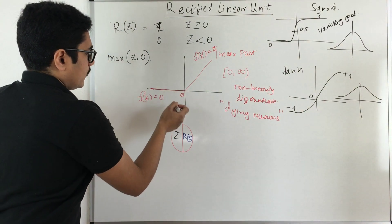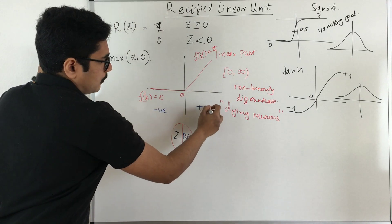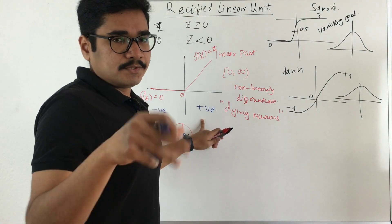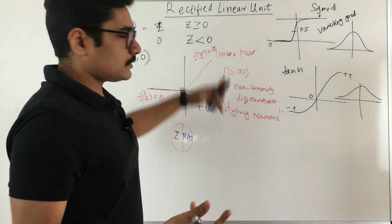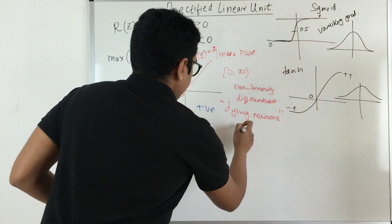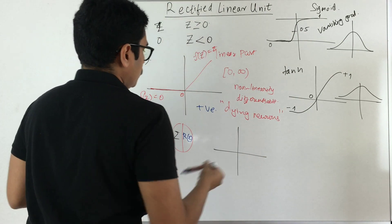But when you just take the derivative of this part that is on the negative axis. So this is your negative axis on your number line, this is your positive axis. So for positive axis when you do the gradient descent it does not cause any problem.